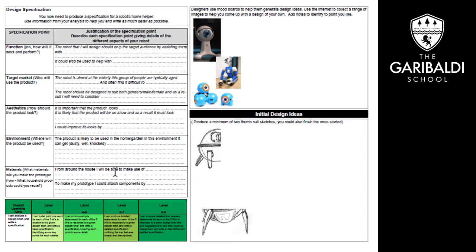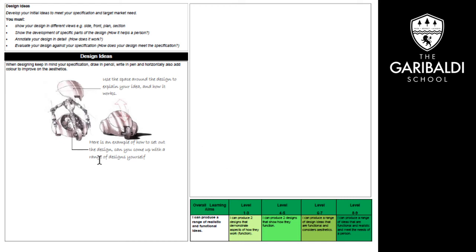Having completed your specification, you have explained hopefully what you want your robot to do and how you'd like it to help. The main thing now is to bear this in mind when creating your design. To help come up with ideas, it's very useful to do a mind map of things that currently exist. Go onto the internet, collect a range of images, and use these to help you come up with a design idea. The initial design ideas stage is literally about coming up with as many ideas as you can — finish the ones started here or come up with your own. Your design idea should meet the requirements from your specification.